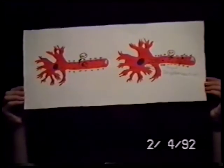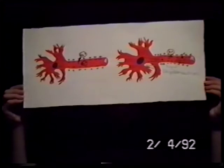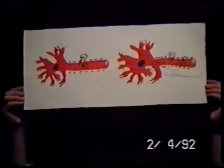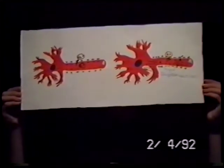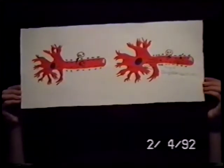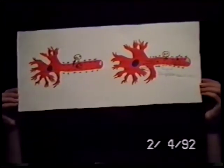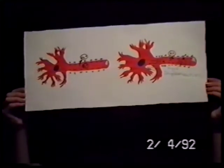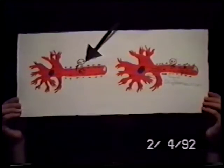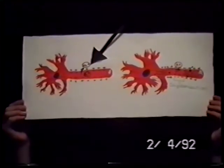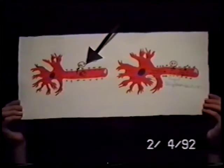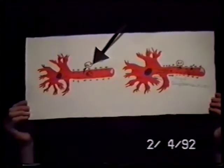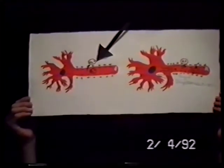Neurons do not always carry impulses. Those that do not are said to be resting. This is fun! Neurons work on an all-or-nothing law. They either transmit an impulse, or they don't.